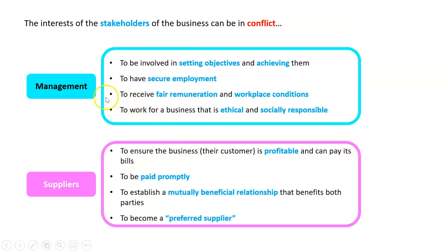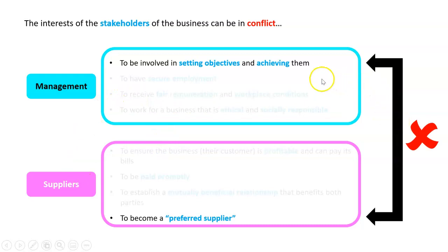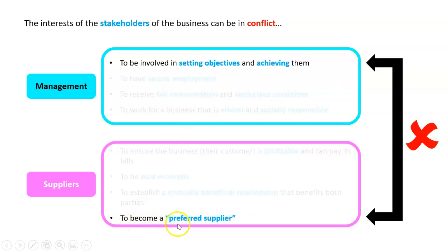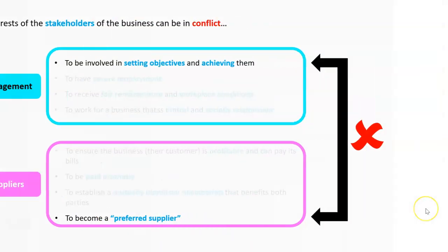Management could also be in conflict with suppliers. Here's one way: management often wants to have a say in setting objectives and achieving them, and one way they can do that is to change who the suppliers are. Whereas a supplier wants to be locked in as what's called a preferred supplier — they want the business to always use them. For example, if you got a job as the CEO or head of manufacturing at Apple and decided to change from one supplier to another because it was cheaper, the original supplier is going to be really unhappy with that. So there's going to be a conflict.